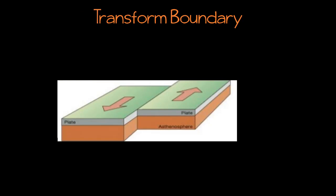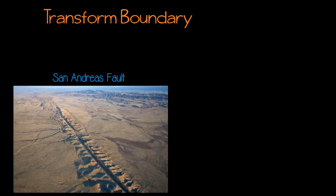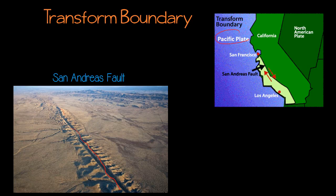The final type of boundary is called a transform boundary. In this type of boundary, the plates are sliding past each other in opposite directions. An example of this is the San Andreas Fault in California. The San Andreas Fault line, which is visible from the ground, is the line where two plates are sliding past each other. We've got the Pacific plate moving in a northwest direction, and the North American plate moving in the opposite direction — so as these plates move, they're sliding past each other.